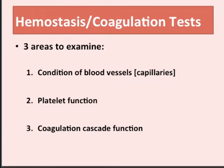When it comes to hemostasis and coagulation testing, there are three different areas of the hemostatic mechanism that we can examine and monitor with our lab tests. The first would be the condition of the blood vessels, specifically the capillaries. Platelet functioning is number two. And lastly, the coagulation cascade. All three of these things are crucial to the hemostatic mechanism working properly — to stop blood flow we have to have healthy blood vessels, functioning platelets, and a fully functioning coagulation cascade.